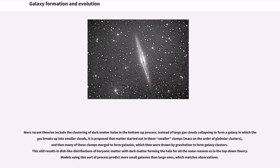More recent theories include the clustering of dark matter halos in the bottom-up process. Instead of large gas clouds collapsing to form a galaxy in which the gas breaks up into smaller clouds, it is proposed that matter started out in these smaller clumps, mass on the order of globular clusters, and then many of these clumps merged to form galaxies, which then were drawn by gravitation to form galaxy clusters. This still results in disk-like distributions of baryonic matter with dark matter forming the halo for all the same reasons as in the top-down theory. Models using this sort of process predict more small galaxies than large ones, which matches observations.